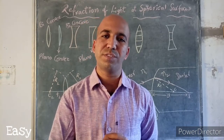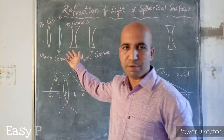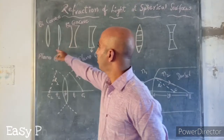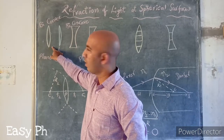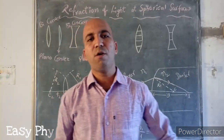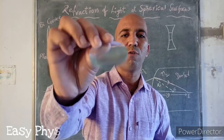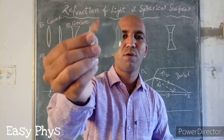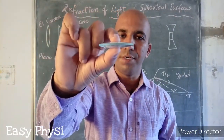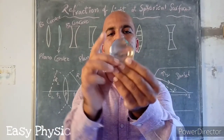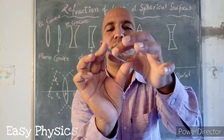Let us discuss the types of lenses. Here we have a few examples of surfaces and lenses. The first type is called biconvex lenses. A biconvex lens is a part of a sphere. The biconvex lens is thick at its middle and very thin at the edges — this is how we can easily identify a biconvex lens.